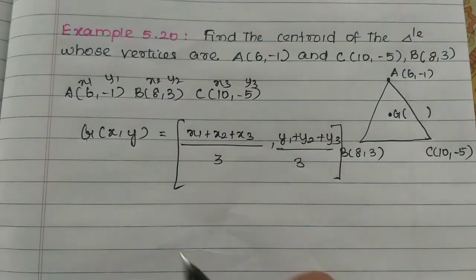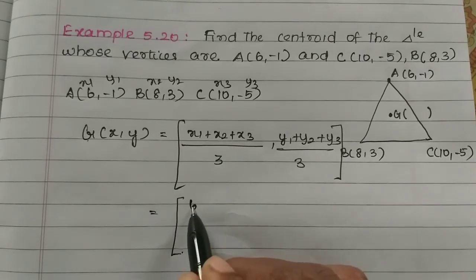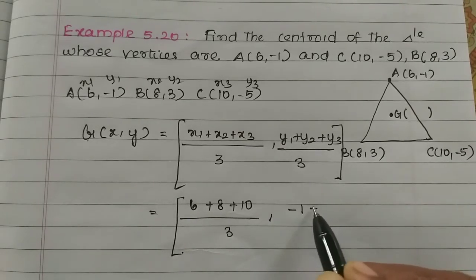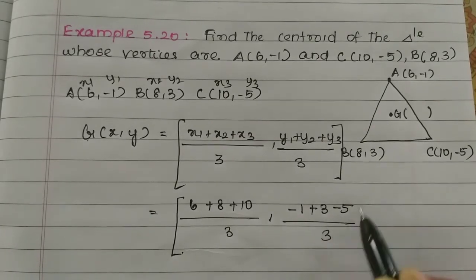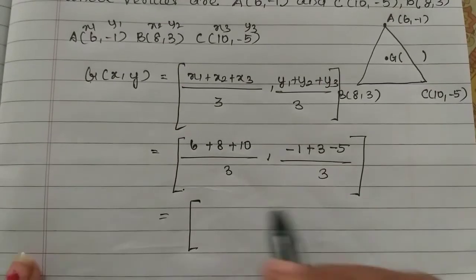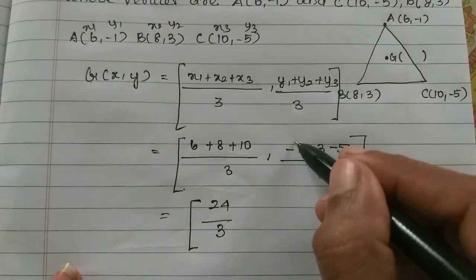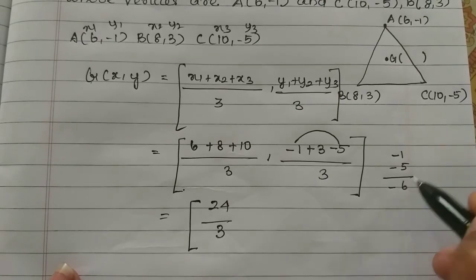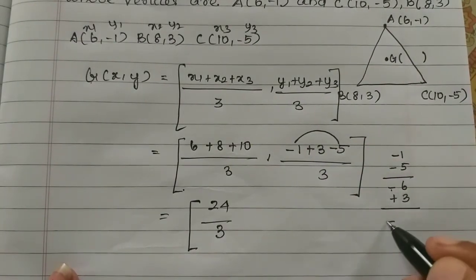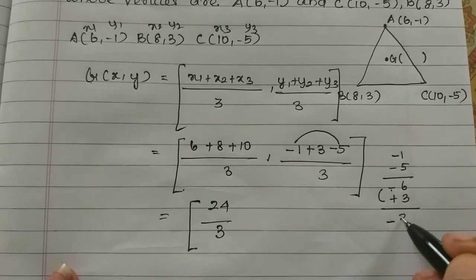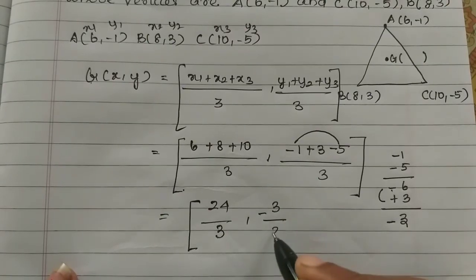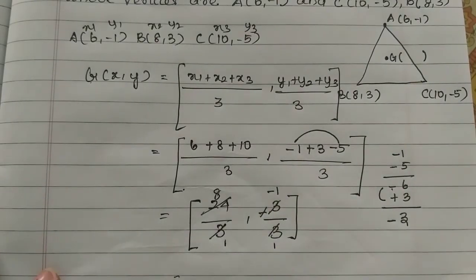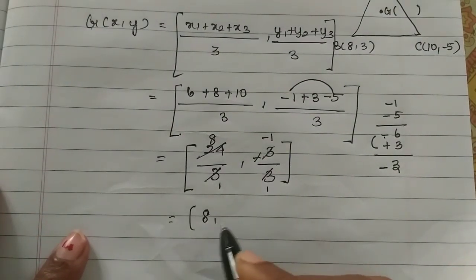Substituting the values: x1 = 6, x2 = 8, x3 = 10 divided by 3; y1 = -1, y2 = 3, y3 = -5 divided by 3. So 6 plus 8 is 14, and 14 plus 10 is 24, giving 24 divided by 3 = 8. For y: -1 minus 5 = -6, then plus 3 gives -3, divided by 3 = -1. So the coordinates of the centroid G are (8, -1).